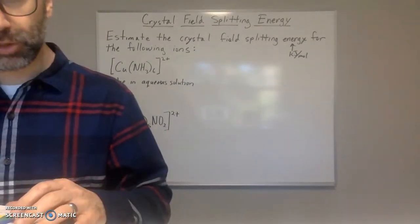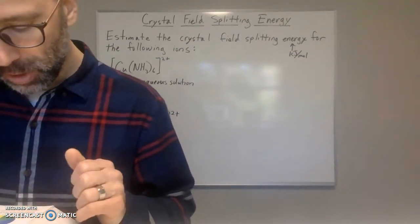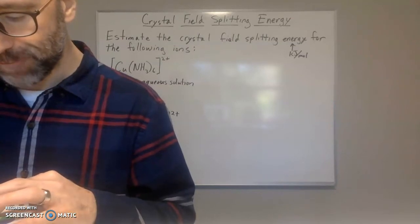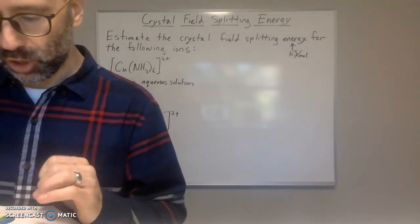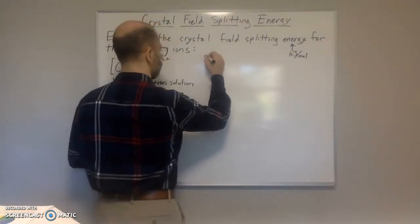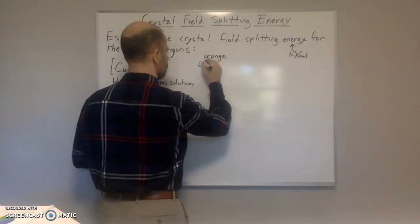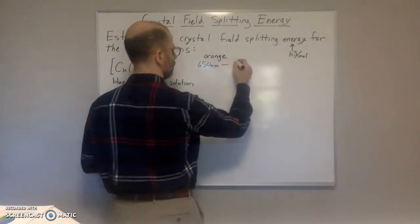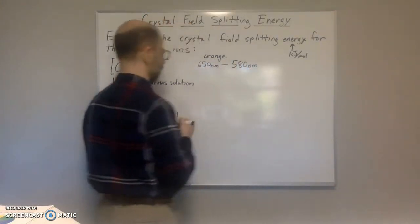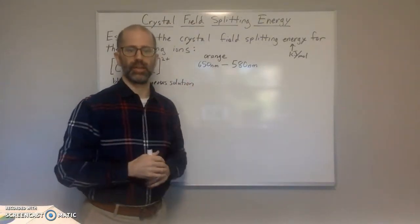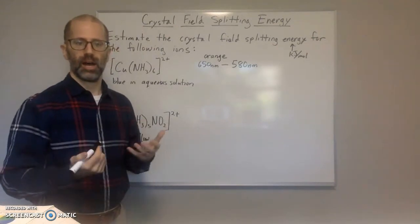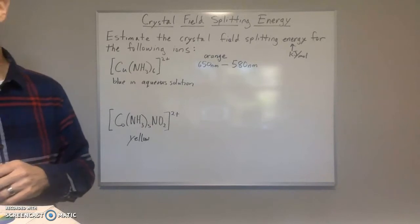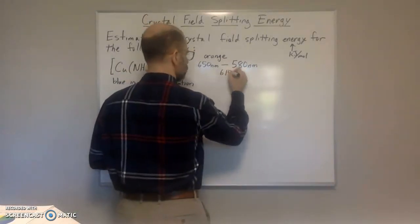Since the complementary color of blue is orange, we've got to look up what the orange range is. So if we look that up in our color wheel — you should have a color wheel available — according to the color wheel, orange falls between the 650 and 580 nanometer range. So we could take the average of those two and get the estimated wavelength for orange light.